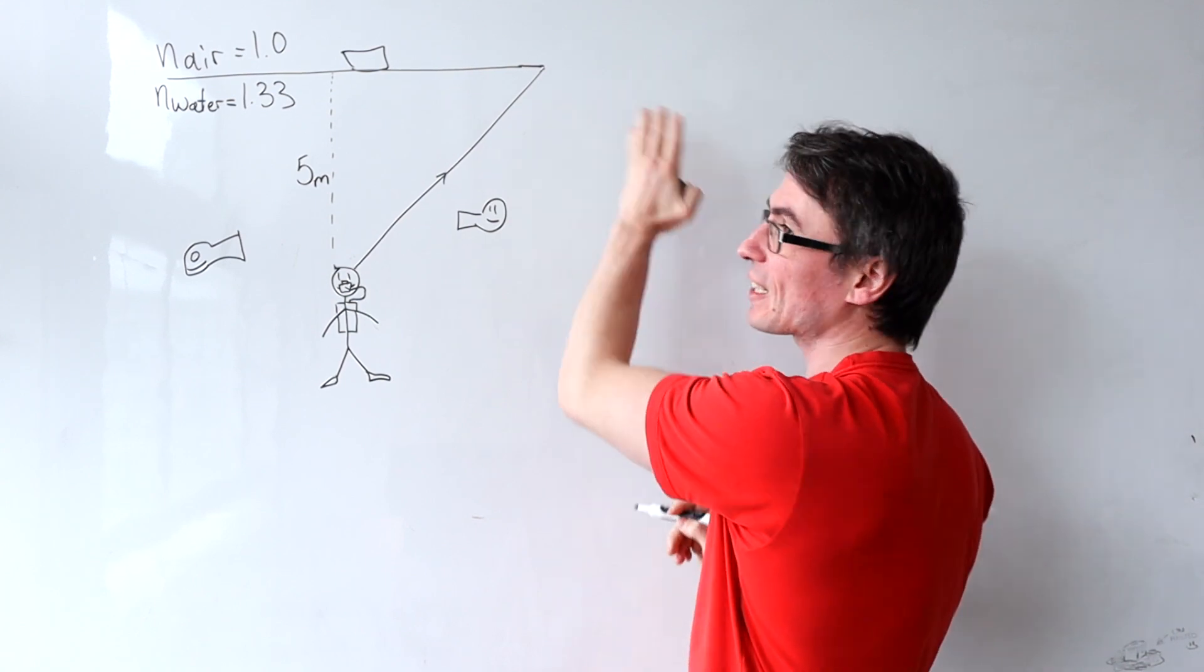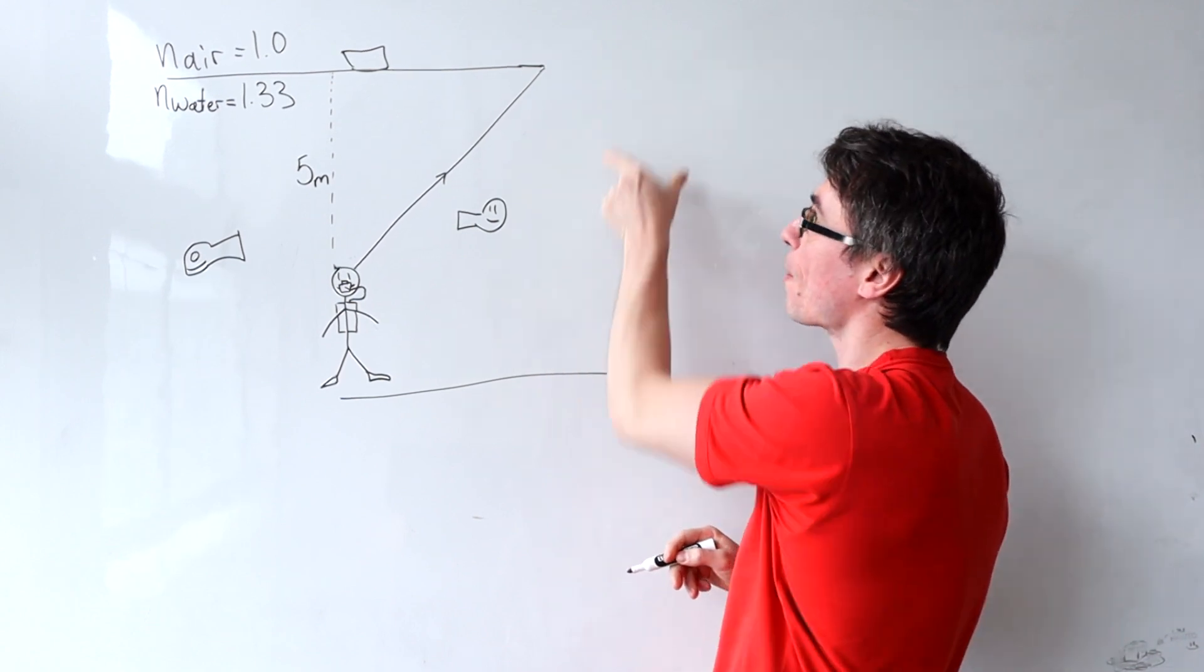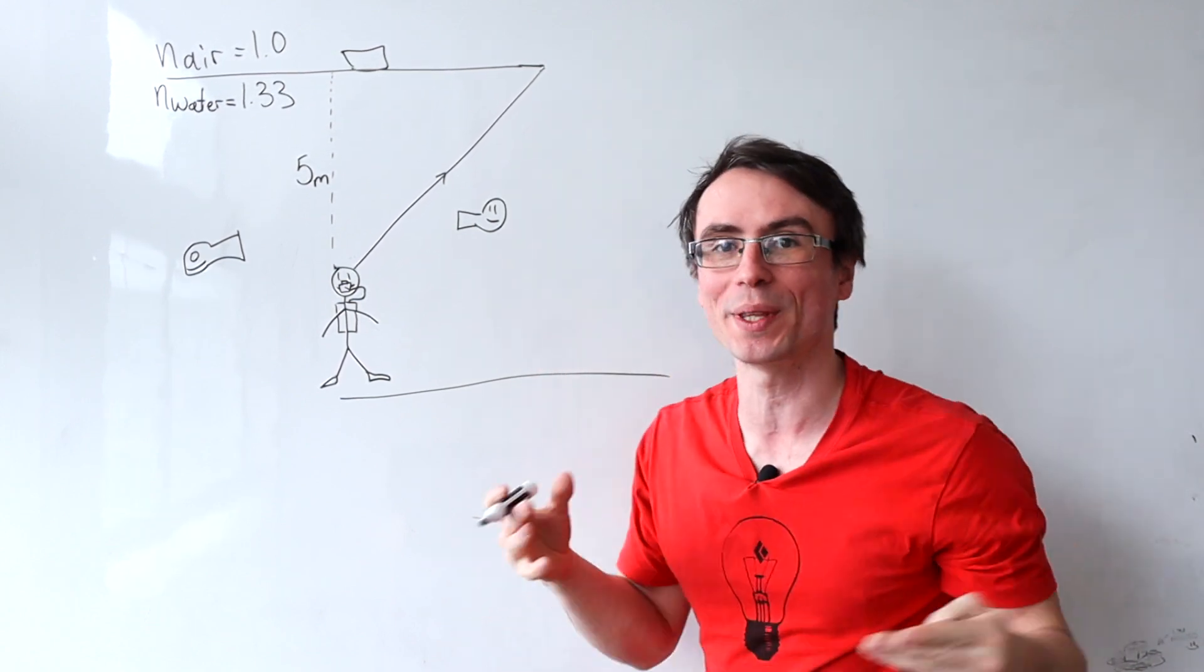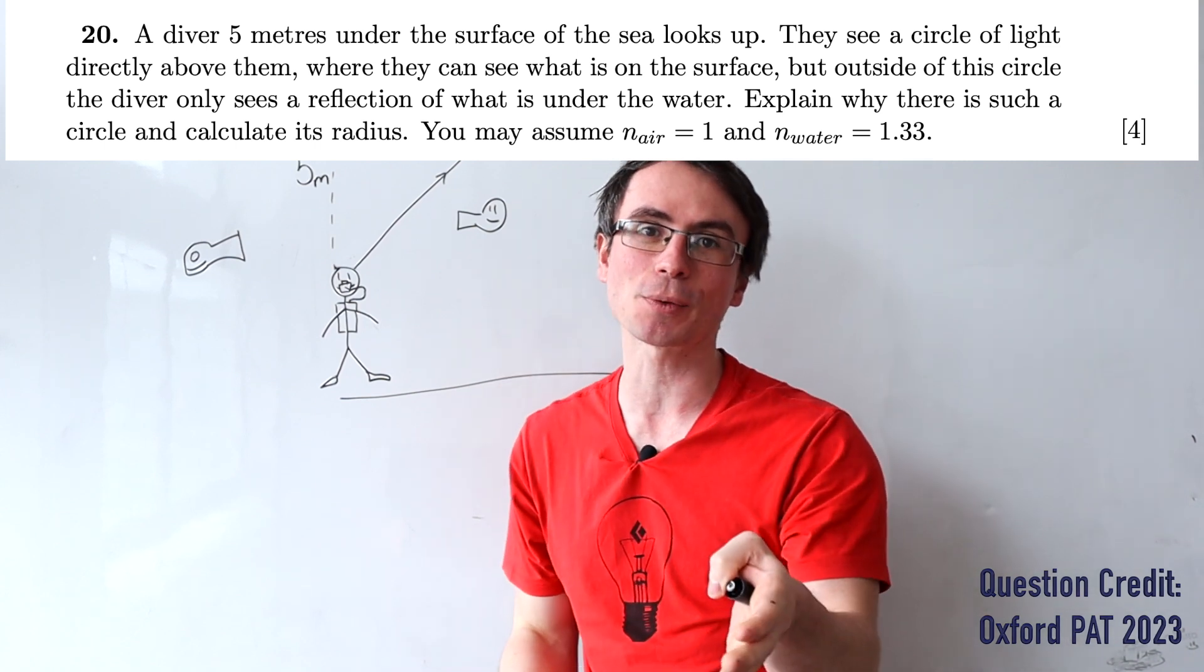Beyond that circle they only see what's reflected from the bottom of the pool that they're in. Explain why such a circle exists and then calculate its radius.